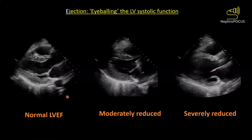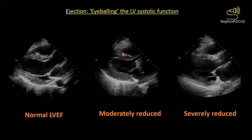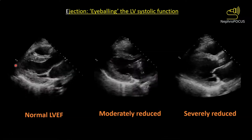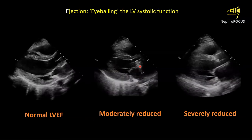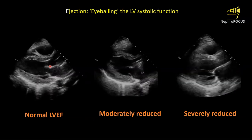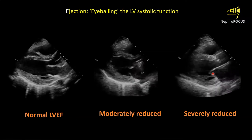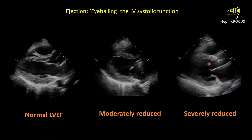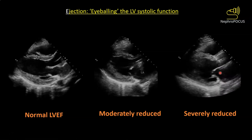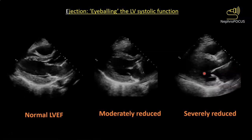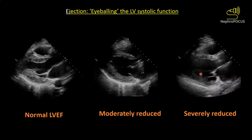In this image there is moderately reduced systolic function — the left ventricular walls are trying to come close but not as much as normal, and the anterior mitral valve leaflet is moving but not going close to the interventricular septum. Here is severely reduced ejection fraction, maybe 10–15 percent — the LV walls are barely moving, not thickening, and the mitral valve leaflet opens just a little because the LV is not emptying well during systole.